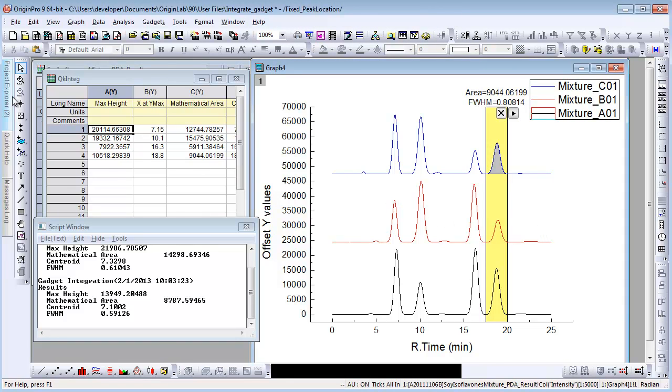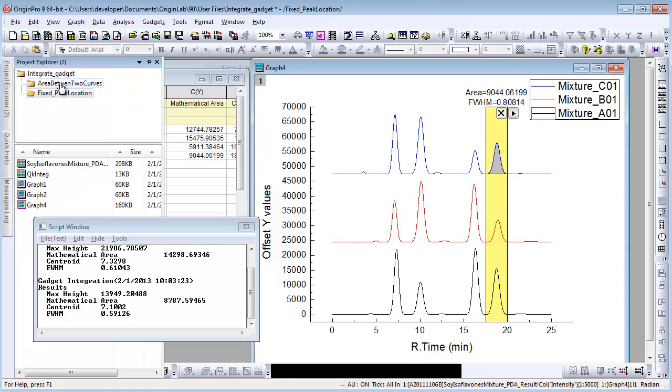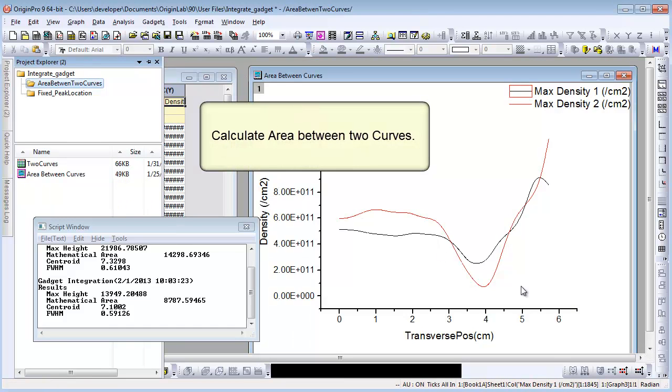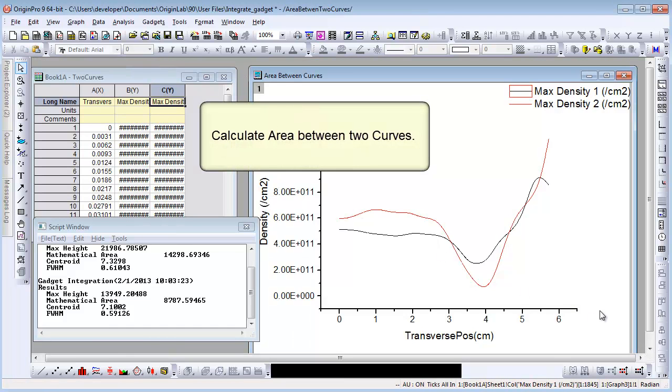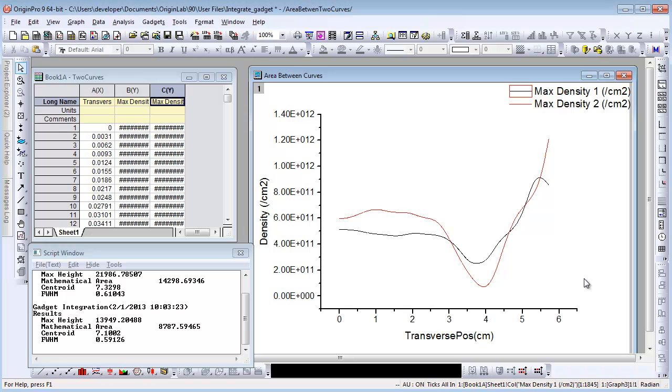Now let me show you how to calculate the area between two curves. There are two data plots in the graph. MaxDensity1 is the active plot which is indicated by the red frame in the legend.